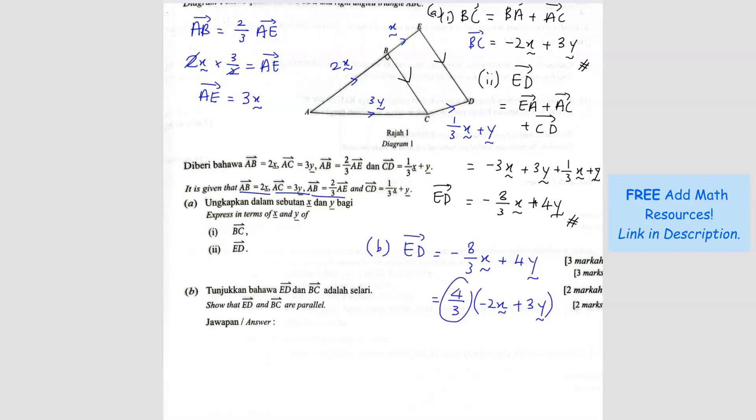So we can actually put 4 over 3. Let's see. 4 over 3 times negative 2 will give me negative 8 over 3. It's the same. And then 4 over 3 times 3 will give me 4Y. Yeah, I can use this. So I factorize 4 over 3 and I get negative 2X plus 3Y.